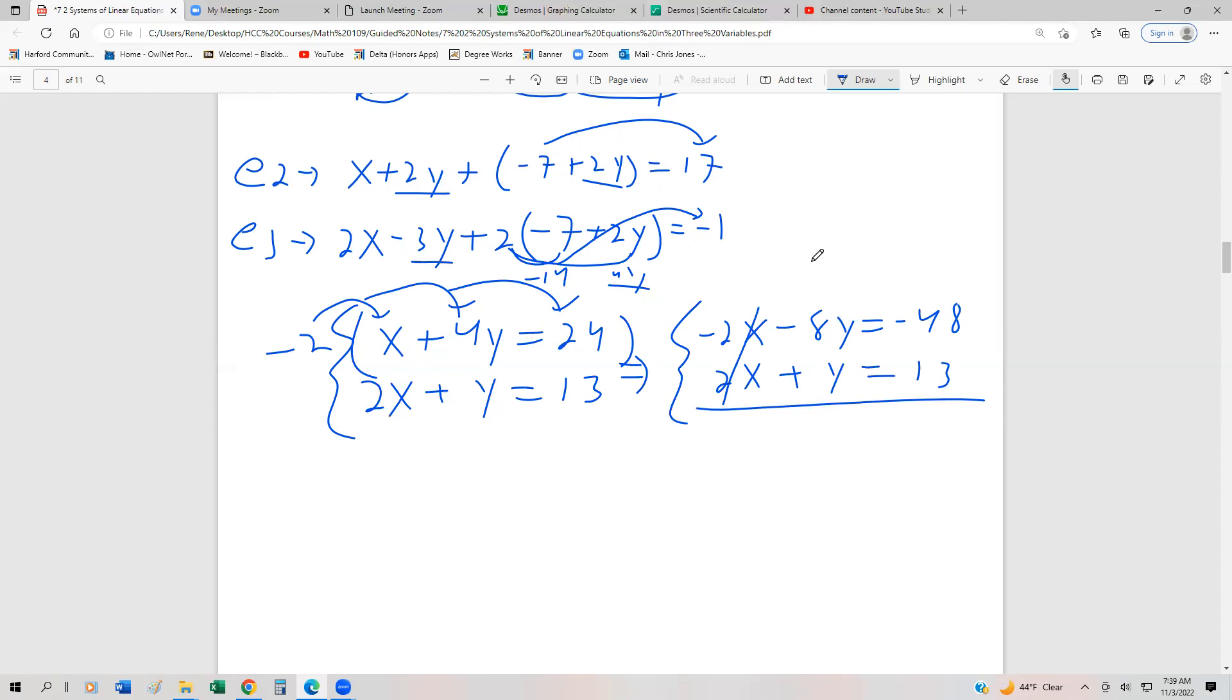The x's cancel out. Negative 8 and positive 1 becomes negative 7y. Negative 48 and 13 becomes negative 35. And we can divide by negative 7. And we get nicely that y is going to be equal to 5.